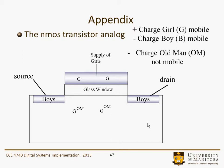Some girls come to the window. They basically repel the girls that are inside the channel, and the lines of force from those girls end up on the old men. So those are still not mobile charge in the channel. A few more girls are supplied to the gate, and they attract some mobile charges into the channel area, and these would come from the source and drain regions. With a few more girls, there's going to be an accumulation of boys in the channel.